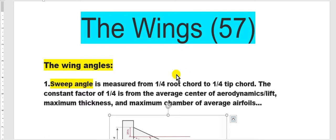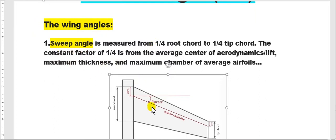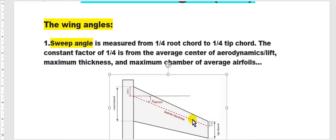I will go to chapter 57, the wings. The swept angle is measured between the horizontal plane and the quarter of the main chord here. The chord at the root and the chord at the tip — it decreases from the root until the tip.